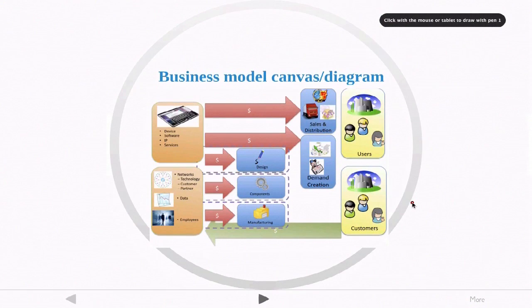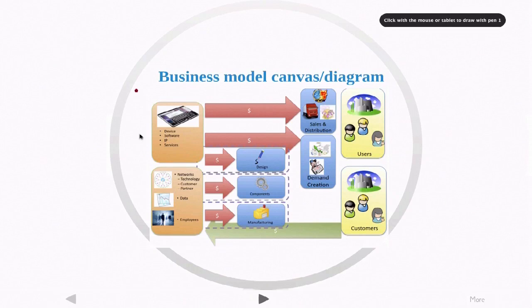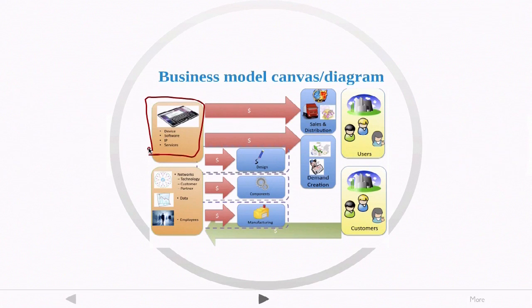And so here's an example of the business model canvas or a business model diagram. And so here we have the device, software, IP, whatever the product is. And we have flows of money outward from the business that are going into sales and distribution or doing some marketing and demand creation. We have a set of users or a set of customers. These might be the same or they might actually be different. They're giving us a flow of money back into the business by paying for the product.